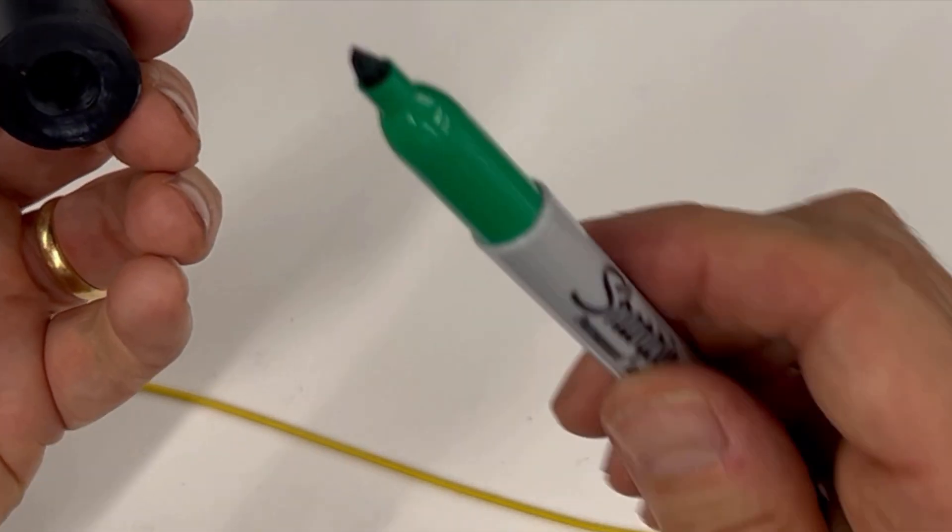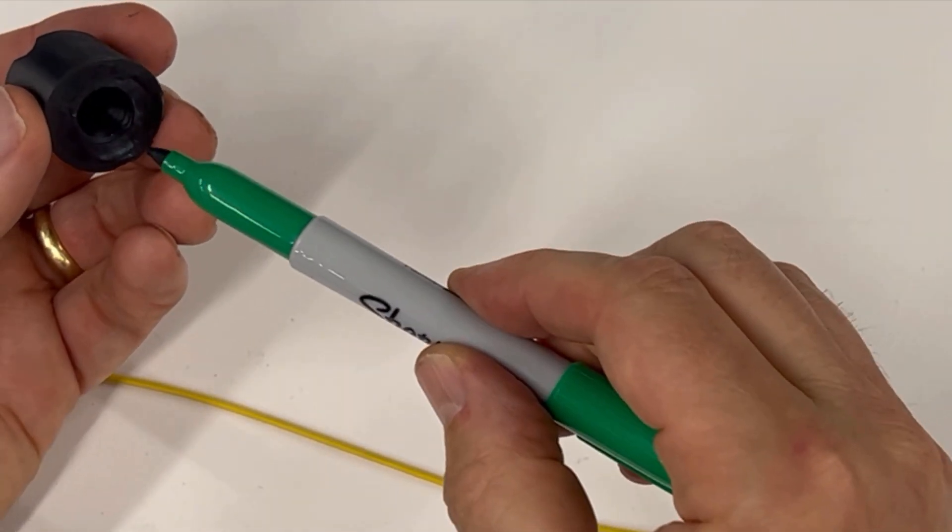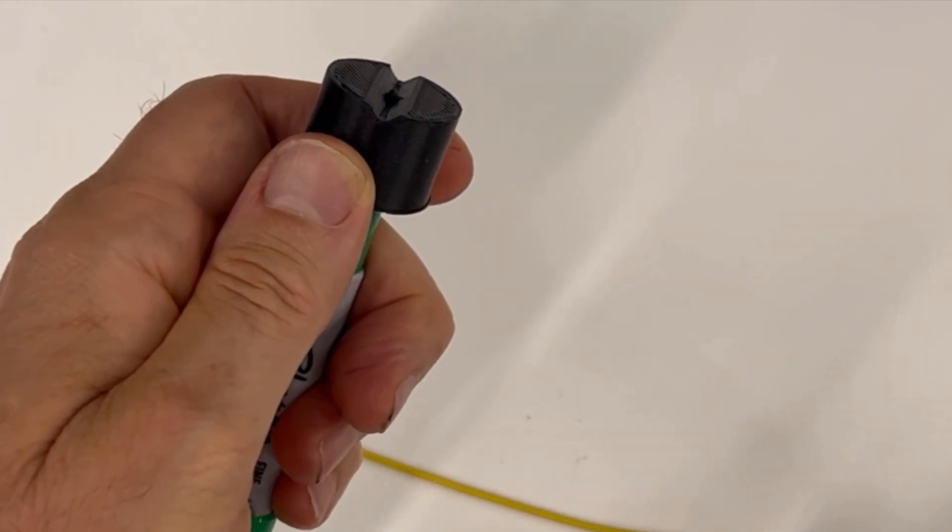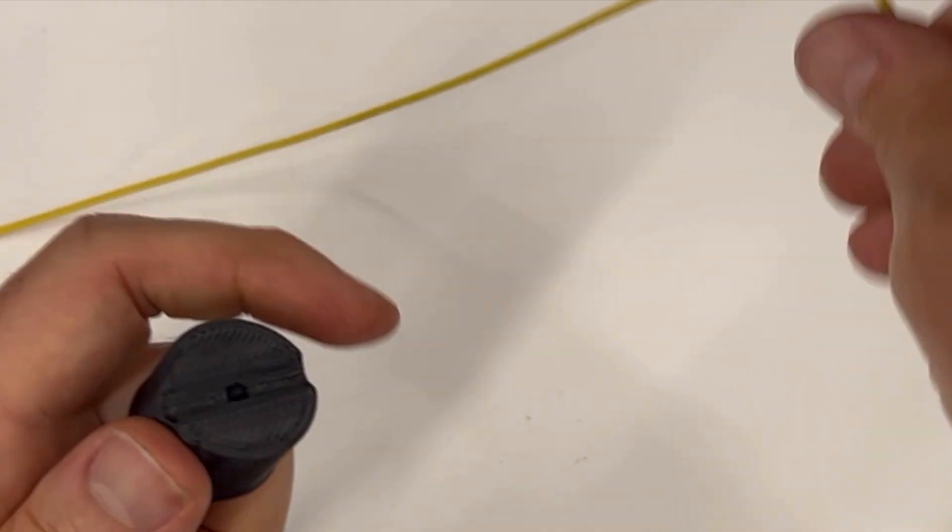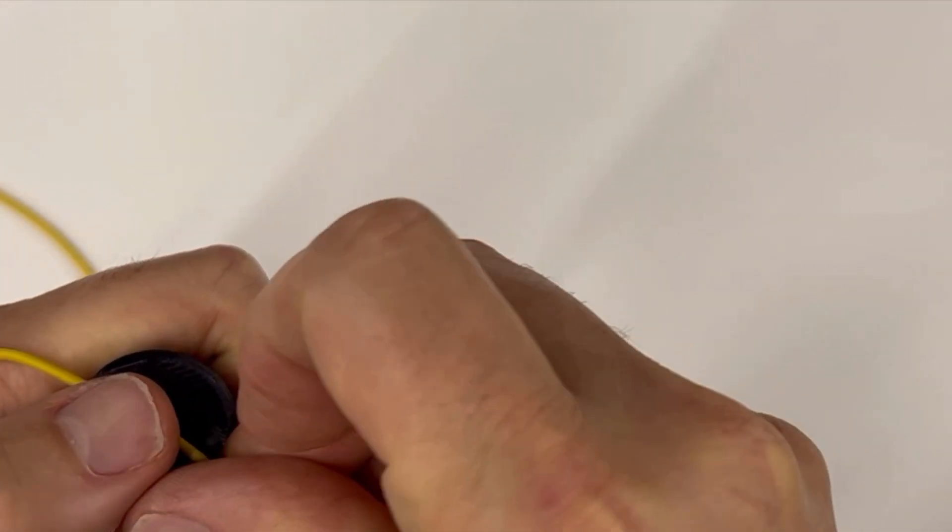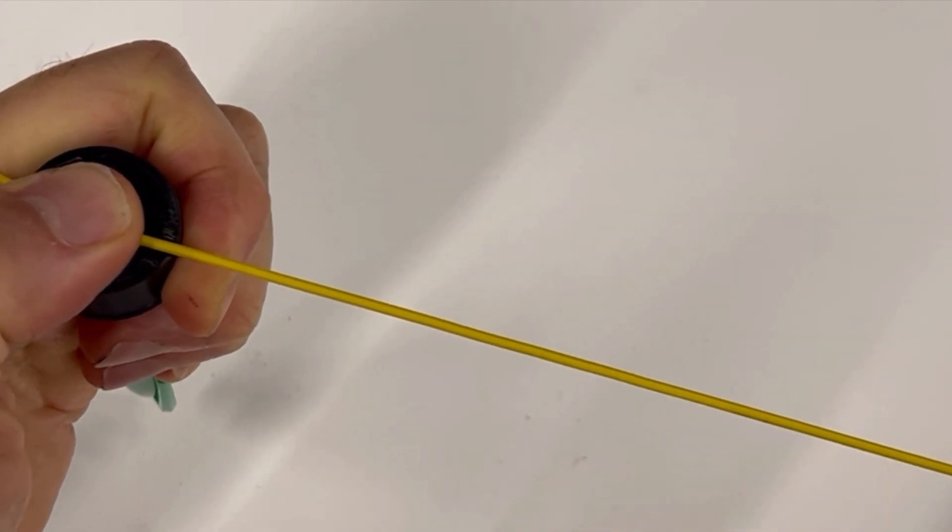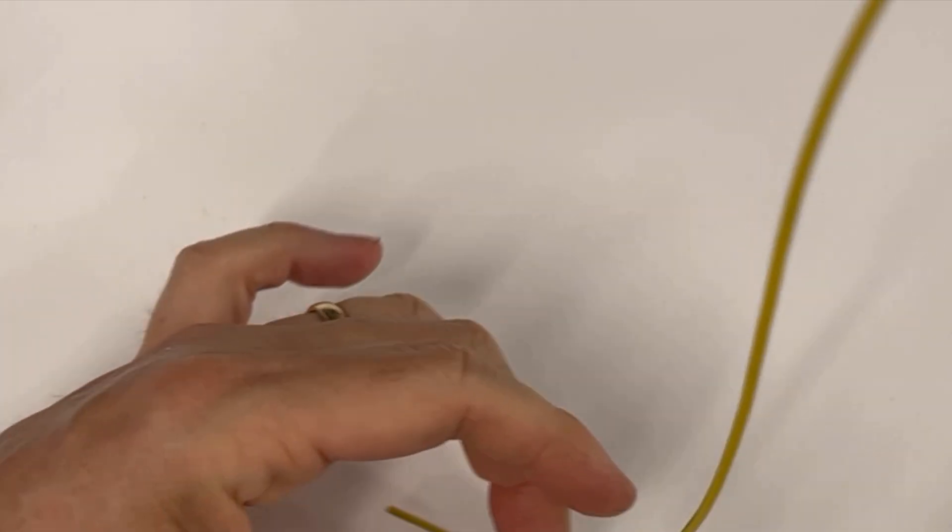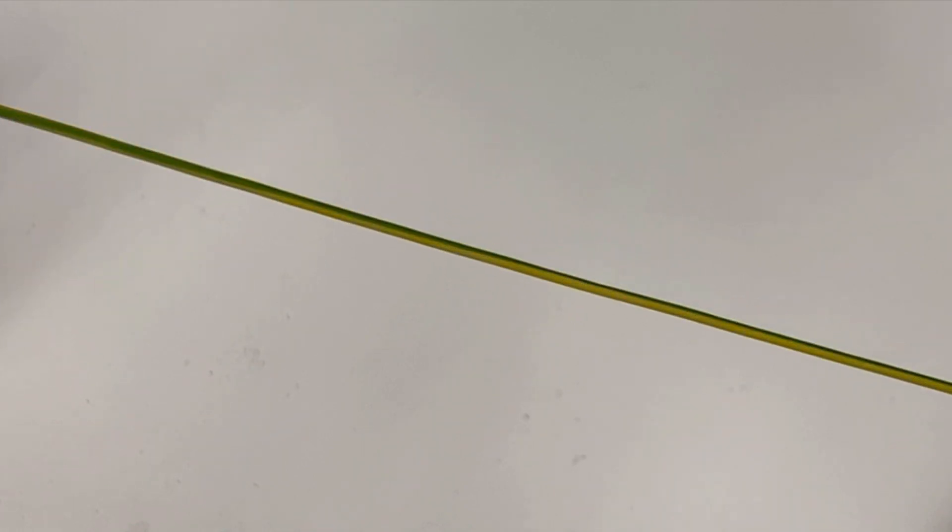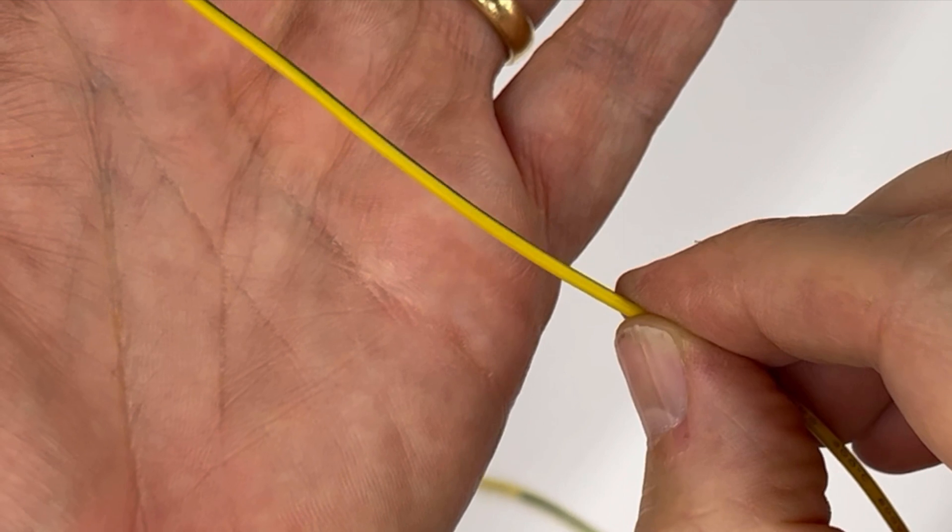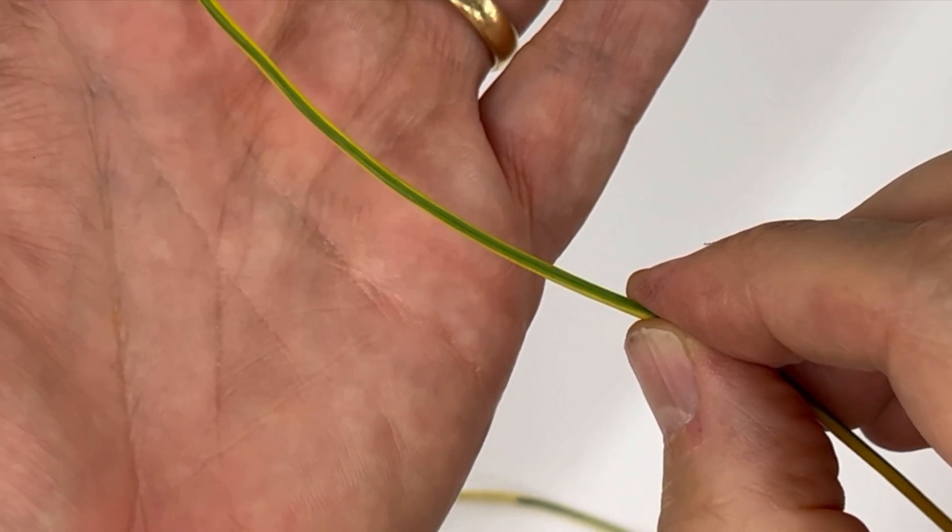You take the tool, you take a green Sharpie with it just barely sticking out. Then you take the wire and you pull the wire through. And when you're done, I don't know how well you can see that, but the wire has got a nice green stripe on it. Looks very much like a Porsche wire.